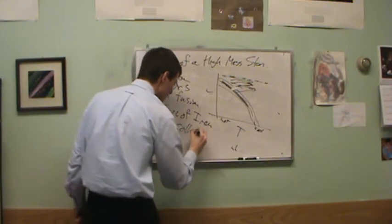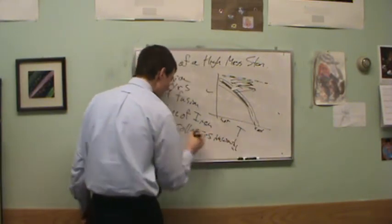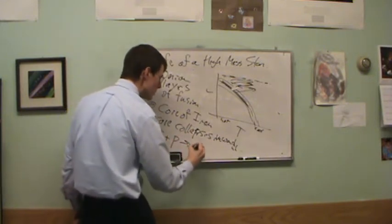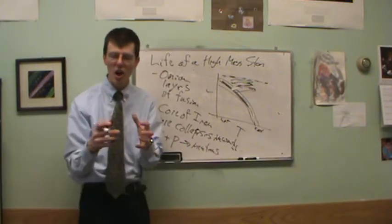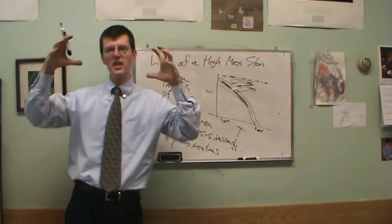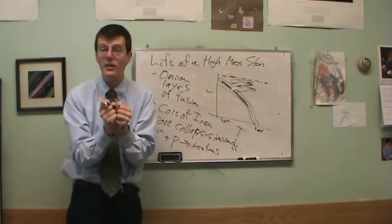Core collapses inward. The electrons are fused together with the protons to make neutrons. Neutrons. So basically you build up a solid ball of neutrons. So you've got this huge, giant core of the star that suddenly, wham, collapses inward. There's nothing to oppose gravity anymore.